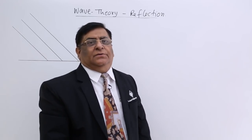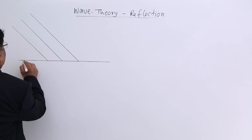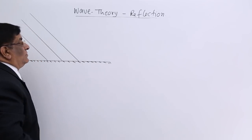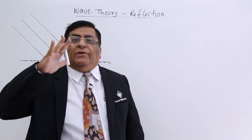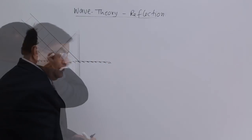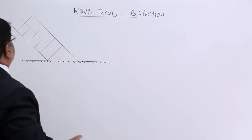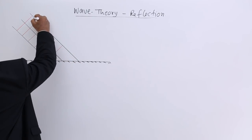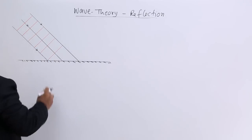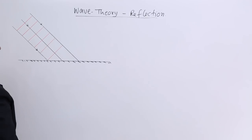We will see reflection explained by wave theory. This is a plane mirror, and according to wave theory, a wavefront is approaching the plane mirror. The direction of propagation of the wavefront is shown, and the red ones are the plane wavefronts.